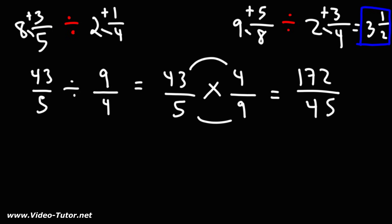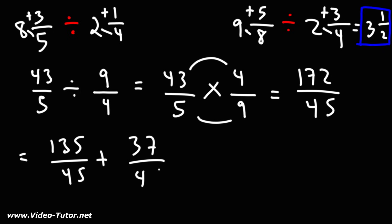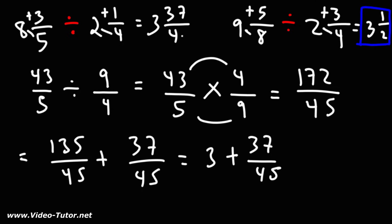Now, how many times does 45 go into 172? The highest multiple of 45 under 172 is 135. 172 minus 135 is 37, so that's the remainder. 45 goes into 172 three times — 135 divided by 45 is 3. So we get 3 plus 37 over 45, and we can write that as 3 and 37 over 45. That's going to be the answer for this problem. It's a lot harder than the second one, as you can see.